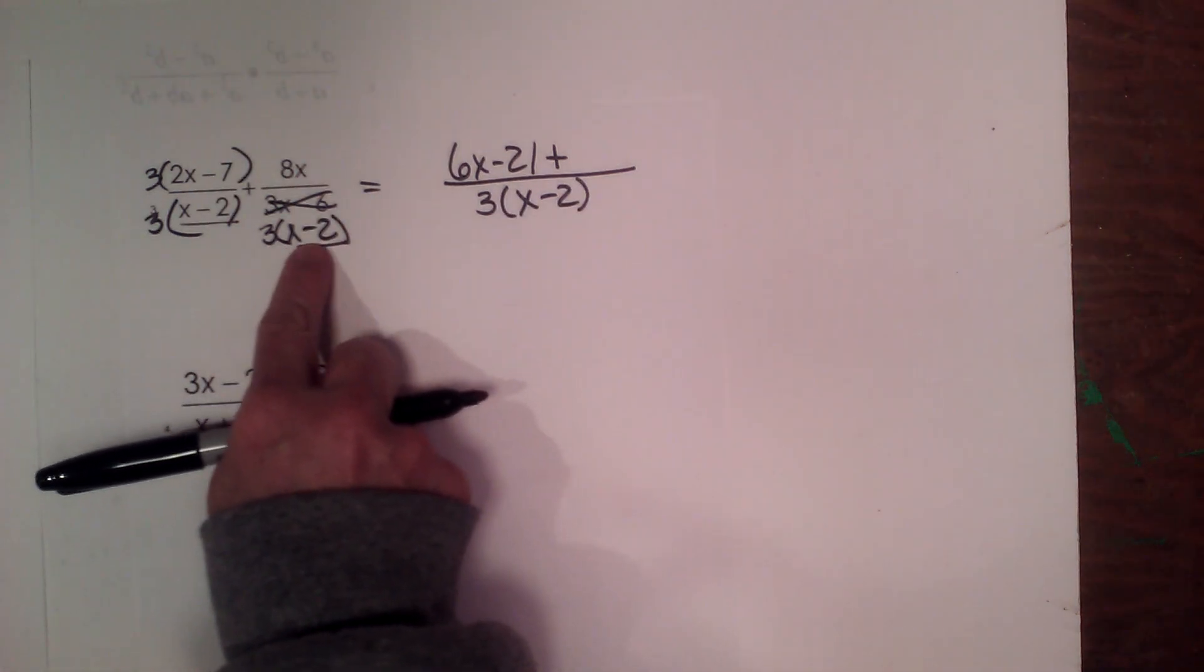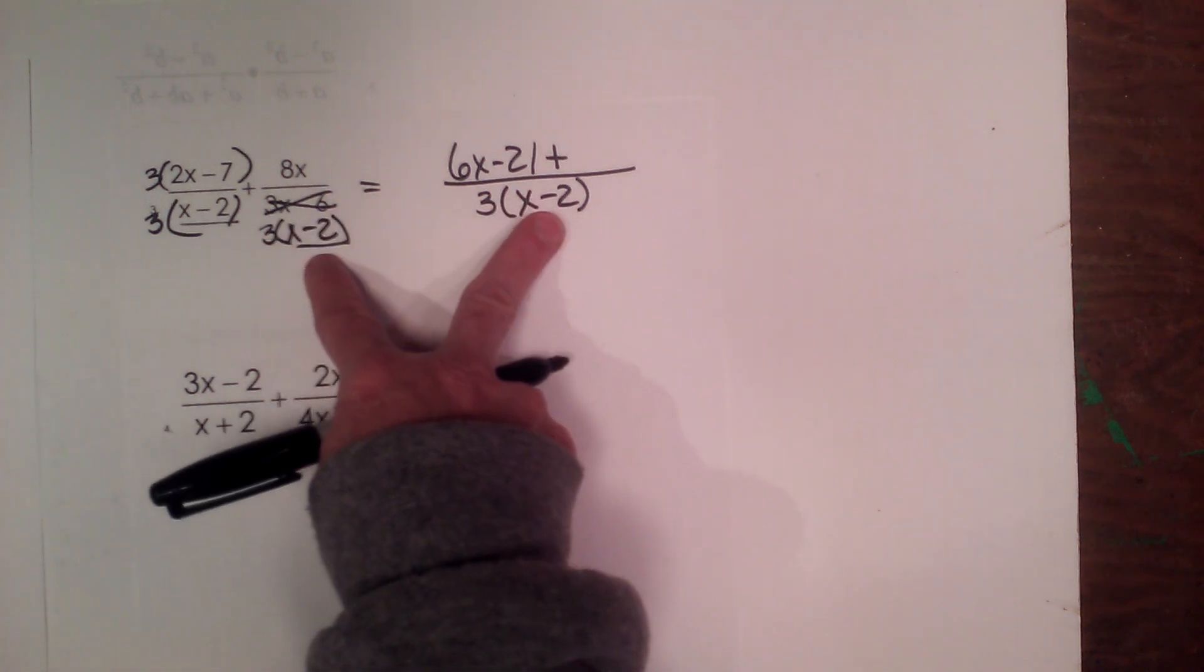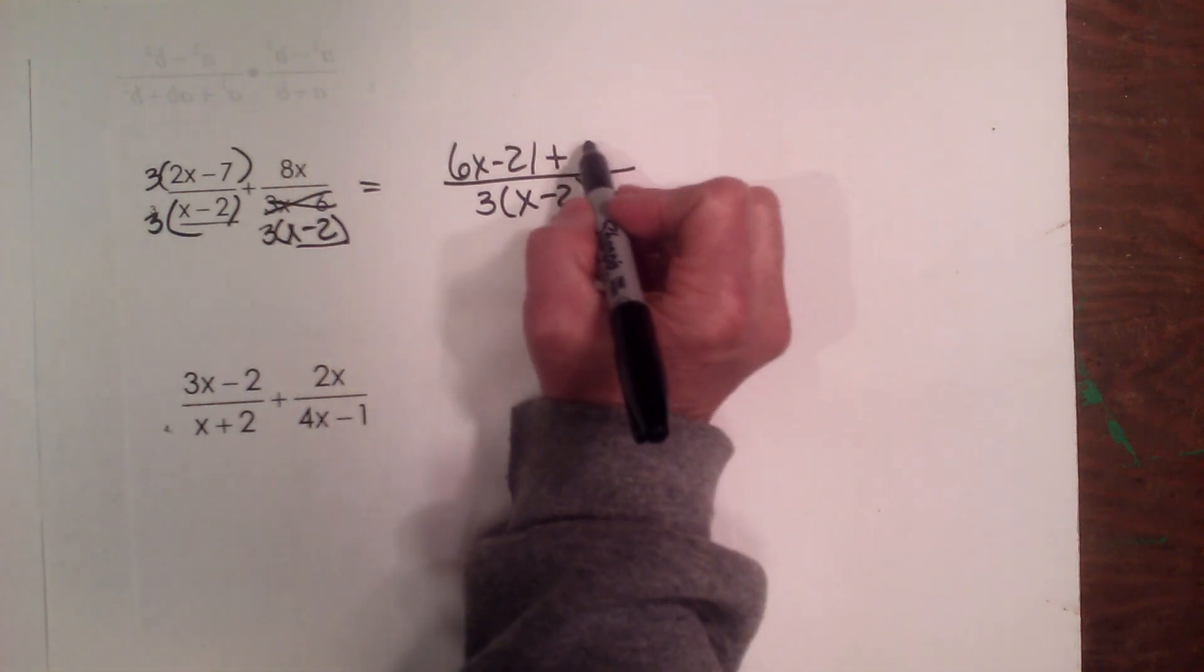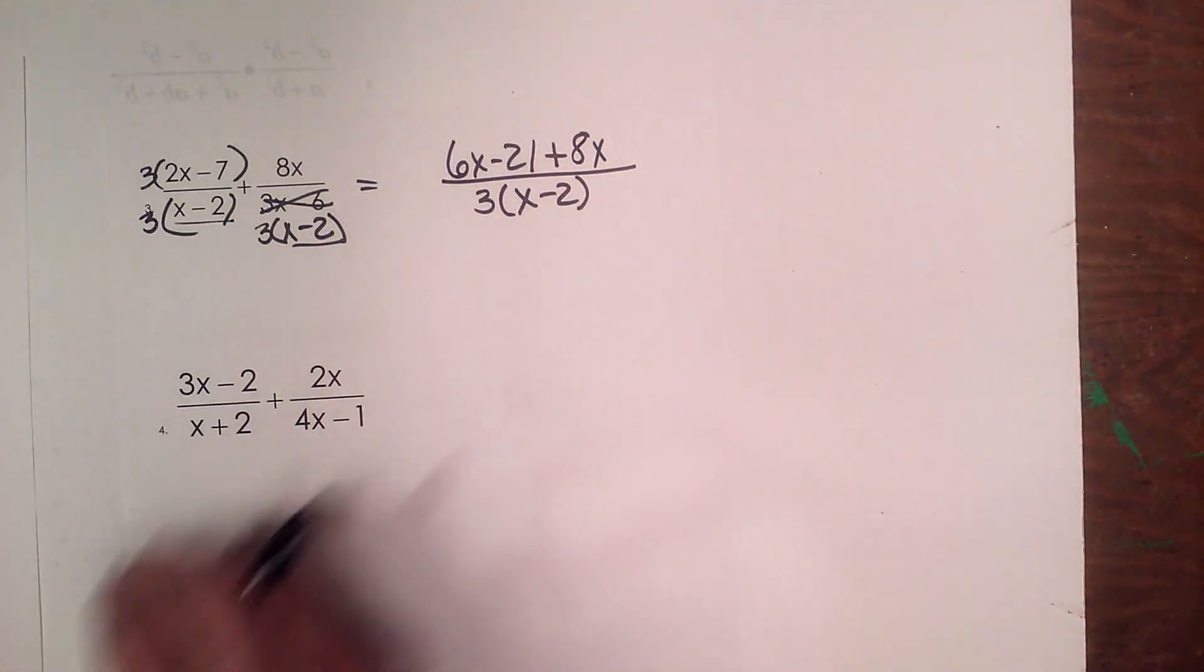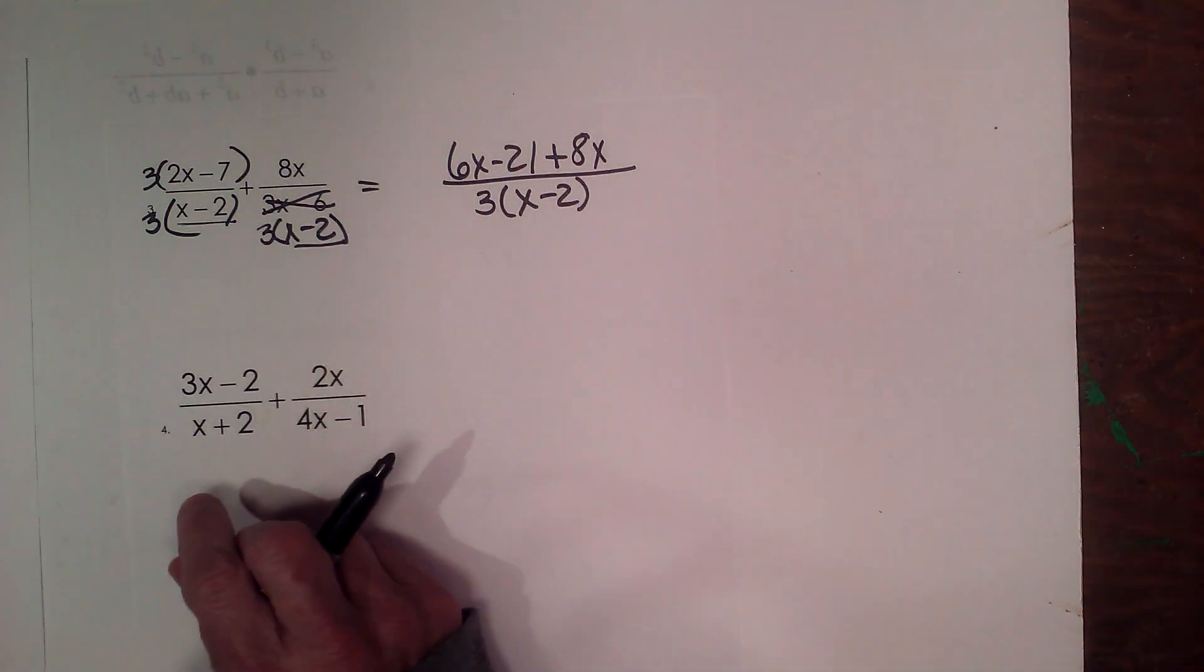Well, my second expression has the full denominator, 3 and x minus 2. So I don't need to multiply this numerator by anything, so I'm just going to bring this over. So now I have a common denominator, I can now just add my like terms.